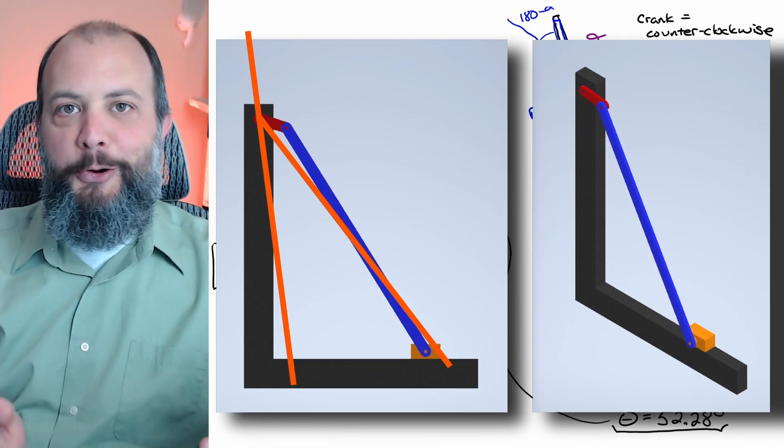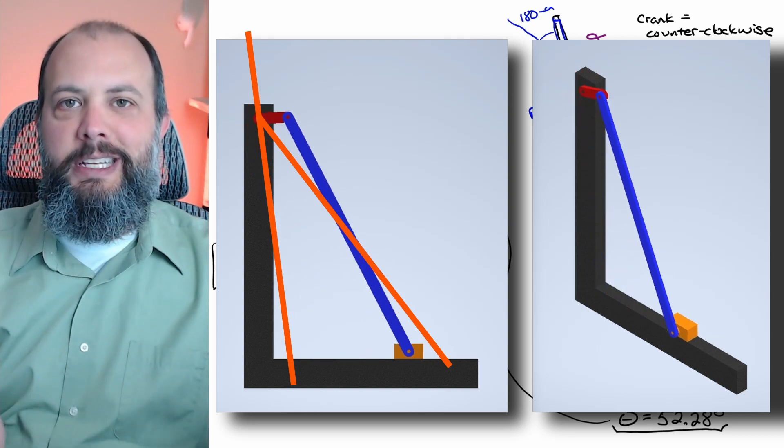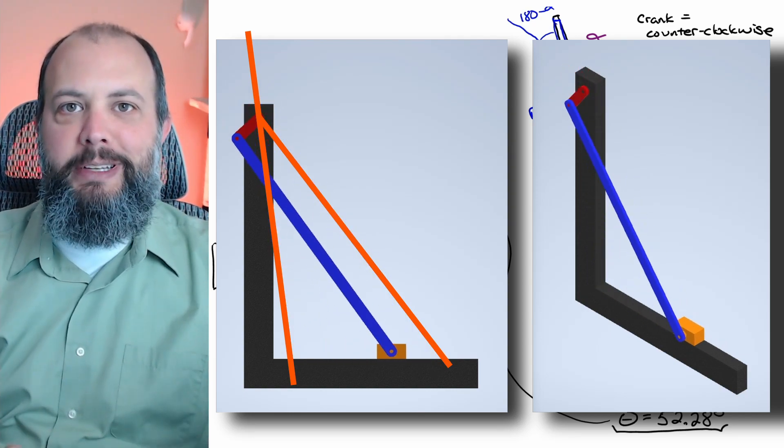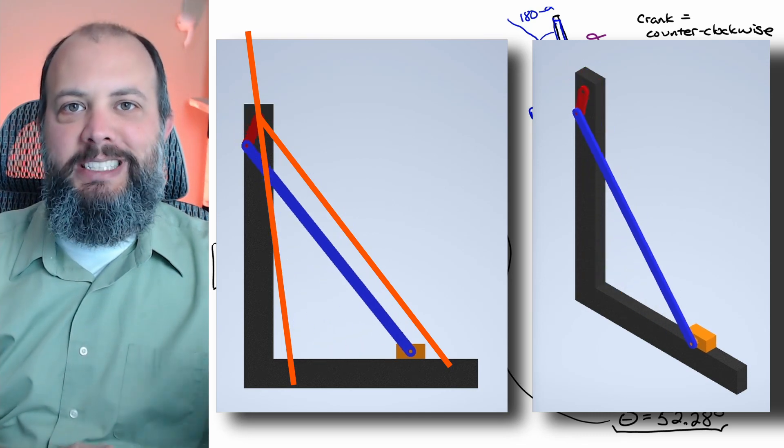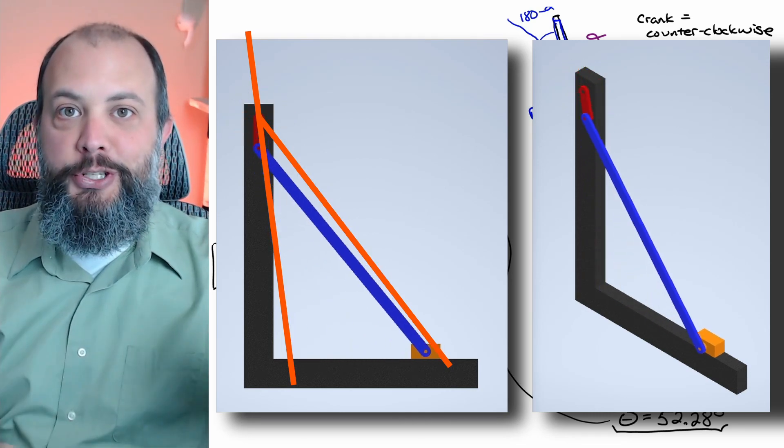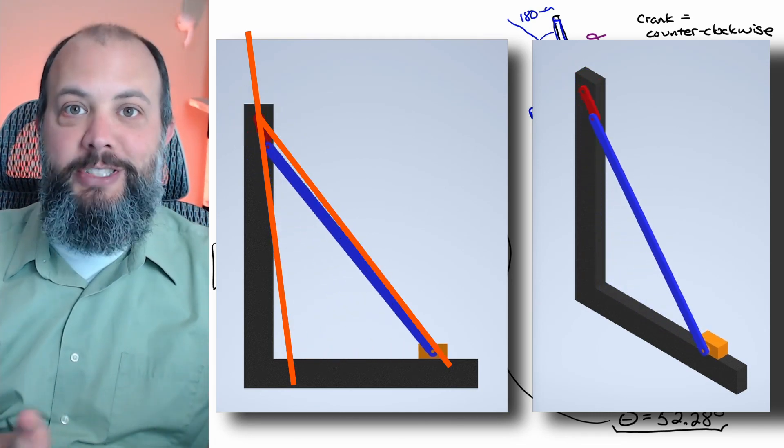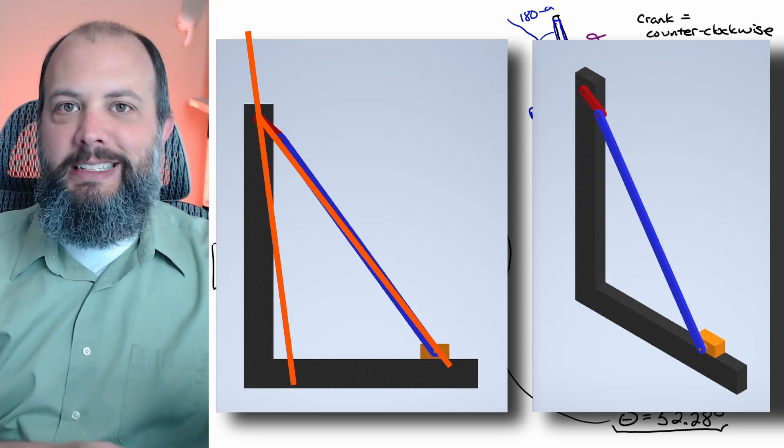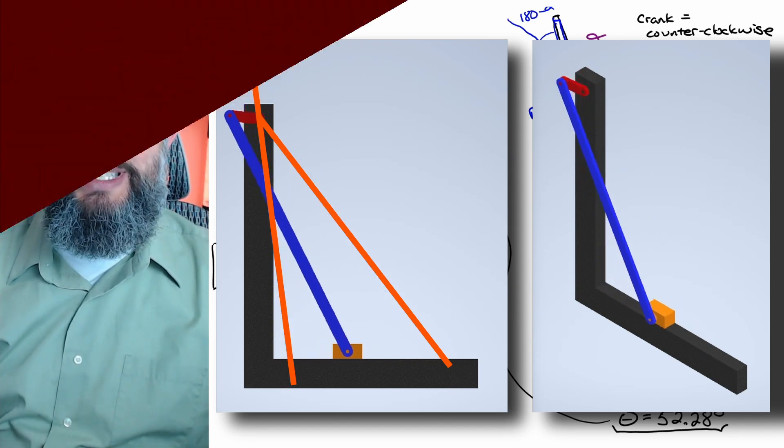And this is what the final crank rocker looks like. You can see that there is a return stroke of 150 degrees, a forward stroke of 210 degrees, a very short 2 inch crank with a much longer coupler almost 18 inches, and that offset distance also pretty large almost as long as the coupler itself.